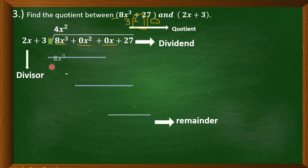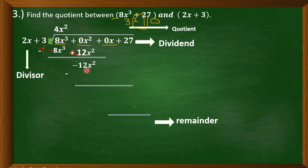Multiply: 4x squared times 2x equals 8x cubed, and 4x squared times 3 equals 12x squared. Subtract — change the sign: 8x cubed becomes negative 8x cubed and 12x squared becomes negative 12x squared. Add: 8x cubed plus negative 8x cubed equals 0, and 0x squared plus negative 12x squared equals negative 12x squared. Bring down 0x. Divide negative 12x squared by 2x — that equals negative 6x.